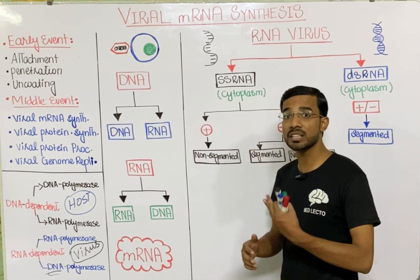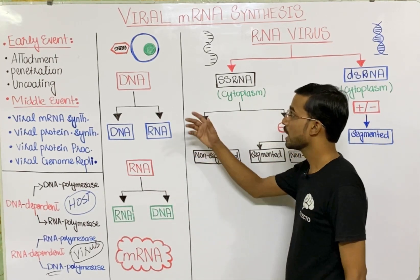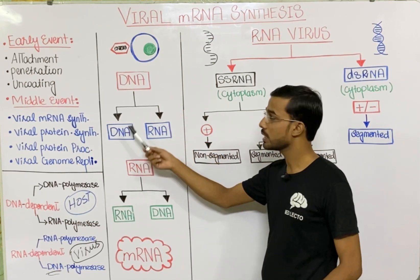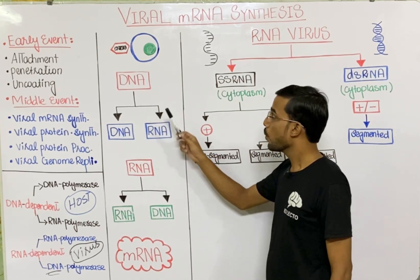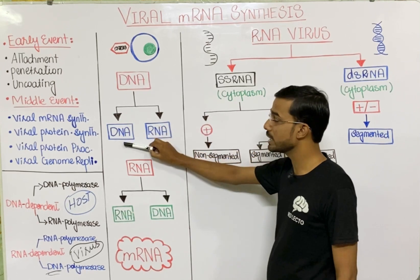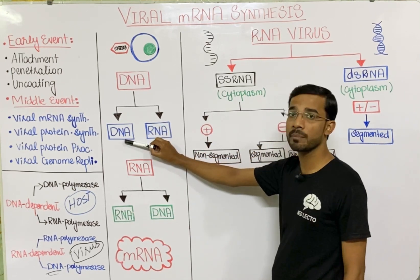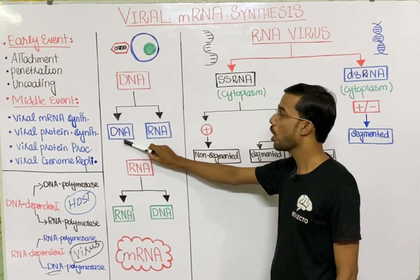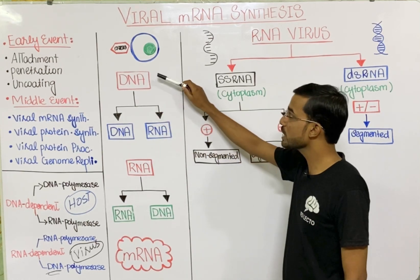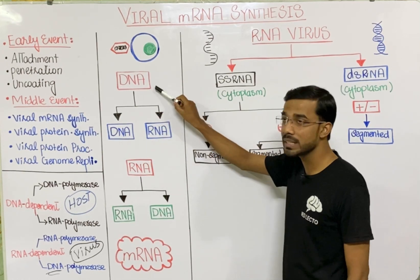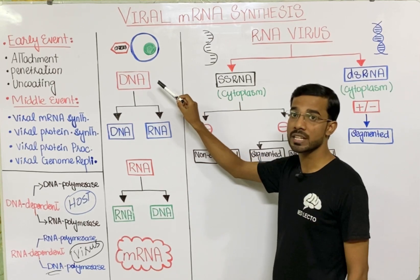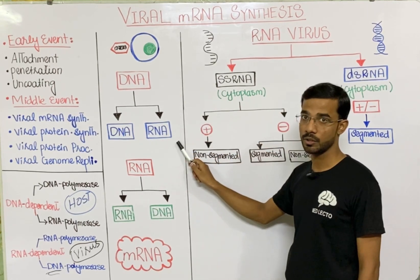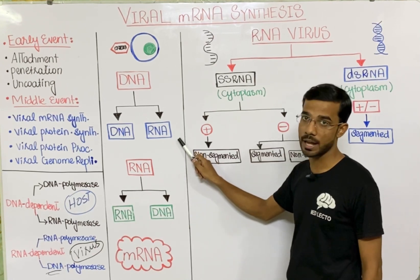If we look at it another way: DNA has two options — DNA can form DNA, or DNA can form RNA. When DNA converts into DNA, it requires DNA dependent DNA polymerase. When you see the formation of RNA from DNA, it requires DNA dependent RNA polymerase, because you are synthesizing the RNA.